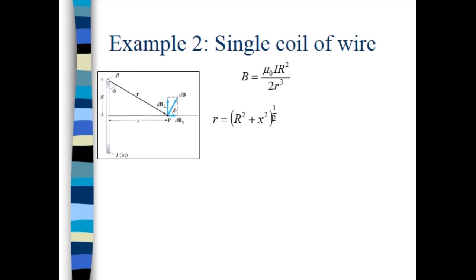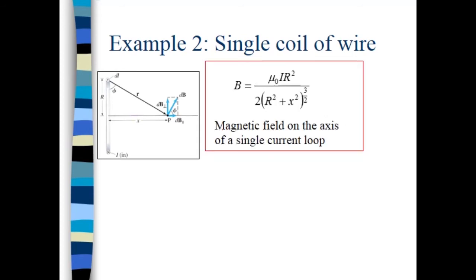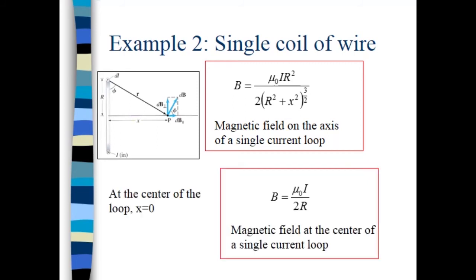Performing the integration and simplifying, we're left with μ₀IR² / 2r³. Since lowercase r is the hypotenuse of a right triangle, r = (R² + x²)^(1/2), so r³ = (R² + x²)^(3/2). Substituting in gives our final result: the magnetic field on the axis of a single current loop. At the center of the loop where x = 0, the equation simplifies to μ₀I / 2R. This is useful for solenoids, where with N turns the field would be N × μ₀I / 2R.